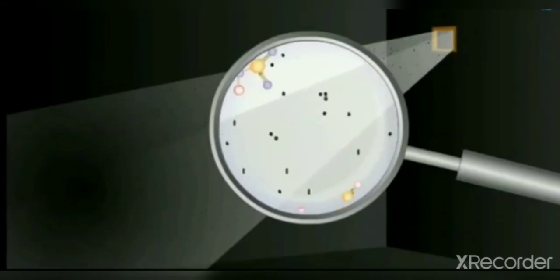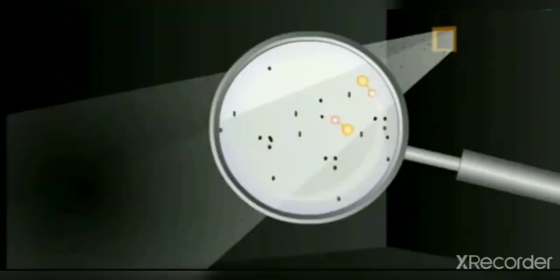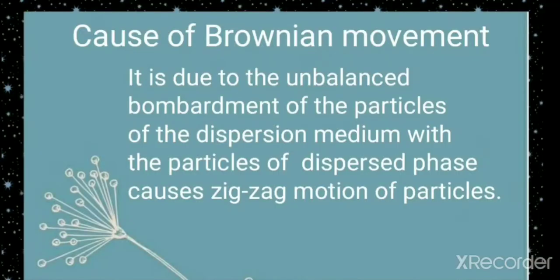This is due to the continuous bombardment or collision of particles of dispersion medium with the particles of dispersion phase. From this example, we can conclude that the cause of Brownian movement is due to the unbalanced bombardment of the particles of dispersion medium with the particles of dispersed phase, causing zigzag motion of particles.